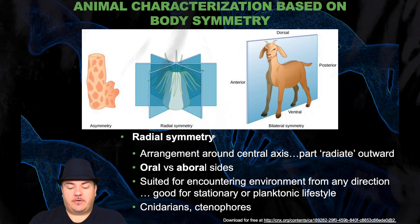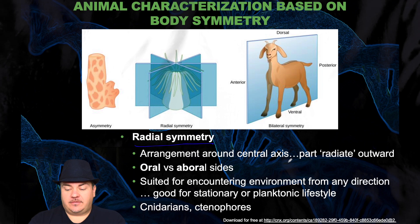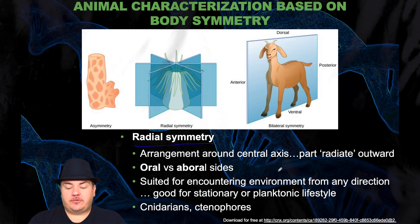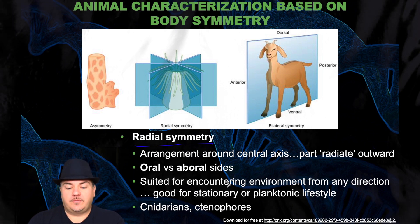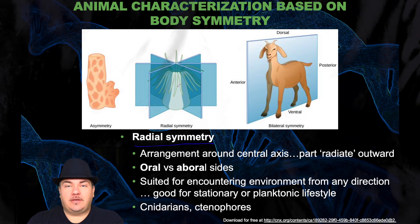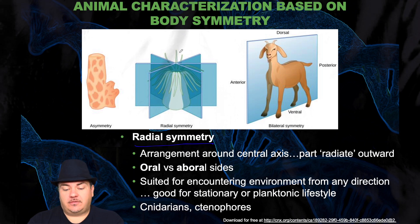Some animals have radial symmetry — arrangement around a central axis. They have oral and aboral sides. This is suited for encountering the environment from any direction and is good for a stationary or planktonic lifestyle. Planktonic means weakly drifting. Examples of this are cnidarians and ctenophores. Radial symmetry would be like a flower pot — it doesn't have a right-left, it's the same symmetry all around the central axis.